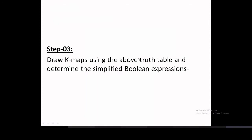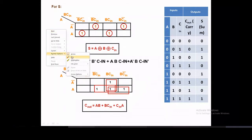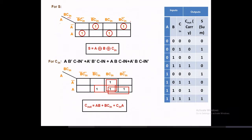Step three: draw K-maps using the truth table and determine the simplified Boolean expression. For sum, the inputs A, B, and C in form a three-variable K-map. Enter only the ones from the sum column. For zero, zero, zero we enter zero; for zero, zero, one we enter one. Likewise, all the ones are entered into the K-map at their corresponding input positions.